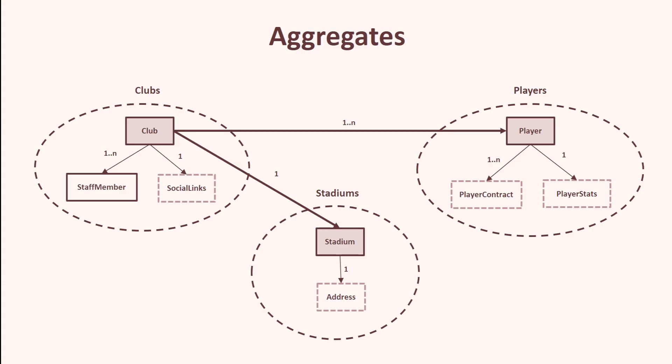The club's aggregate has a collection of entities and value objects related to clubs, and similarly the player's aggregate is a cluster of entities and value objects related to players. Each aggregate has a designated entity called the aggregate root, which is the only entry point for external interactions. All operations on the aggregate must go through the aggregate root. If the club aggregate needs information about a player contract, it cannot directly communicate with the player contract — it must communicate with the aggregate root of the player's aggregate, which is the player entity. The aggregate root is responsible for maintaining the integrity and consistency of the entire aggregate, and internal entities and value objects should not be directly accessible from outside.